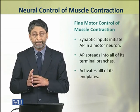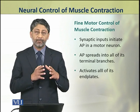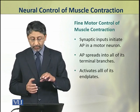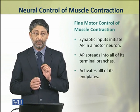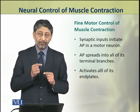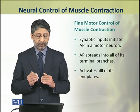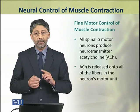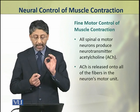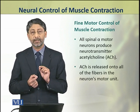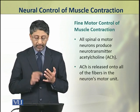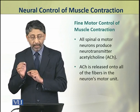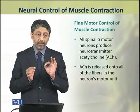Synaptic inputs in motor neurons initiate action potentials. These action potentials spread to all of the terminal branches, activating all of the end plates of the fibers they innervate. All spinal alpha motor neurons produce the neurotransmitter acetylcholine, which is released onto all of the terminal fibers in a single motor unit.